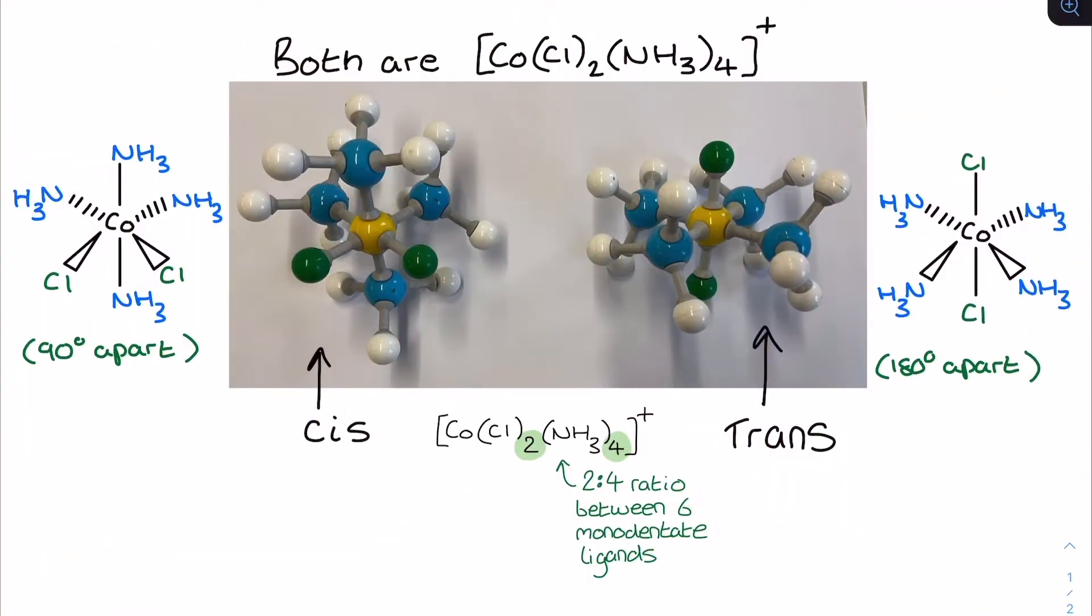On screen now you can see that I've got two different stereoisomers, both for the formula CoCl₂(NH₃)₄ with a positive charge. Now the cobalt here is cobalt 3+, the two Cls mean that I've got two chloride ion ligands, and I've also got four NH₃ ammonia ligands in this complex ion as well. You can see I've labelled up the two structures as cis and trans already, but I want to get to the bottom of how the formula informs us that we can have cis-trans stereoisomers.